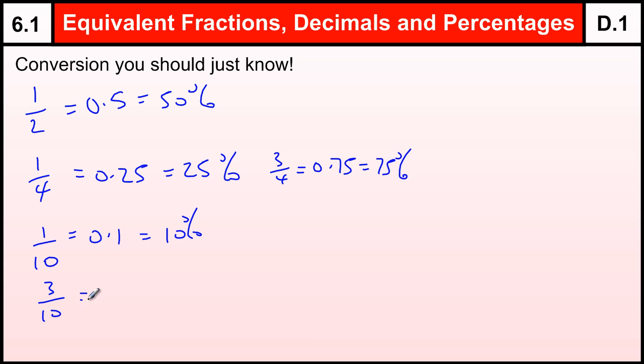And so, 3 tenths would be 0.3, or 30%, and 7 tenths would be 0.7, and 70%, and any multiple of 10, any type of tenth there would be equivalent.